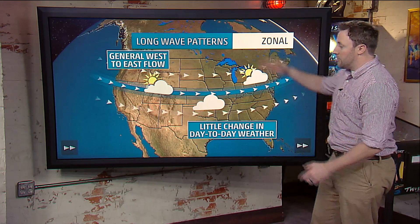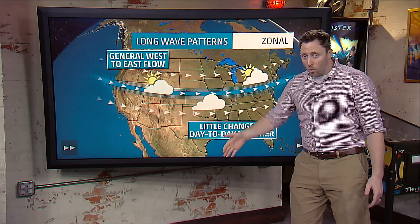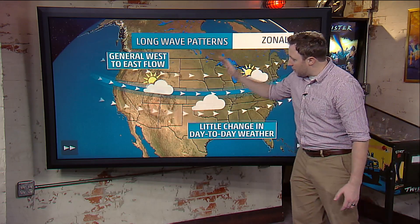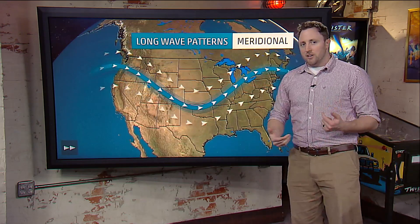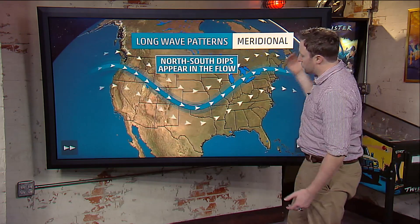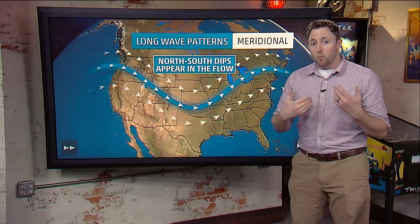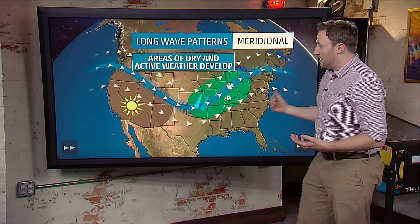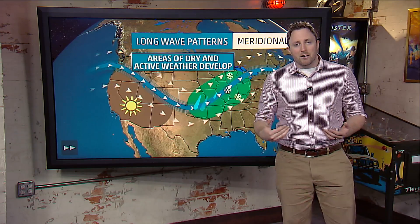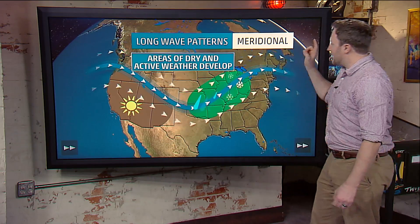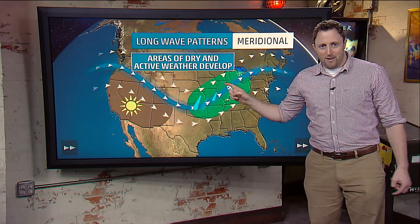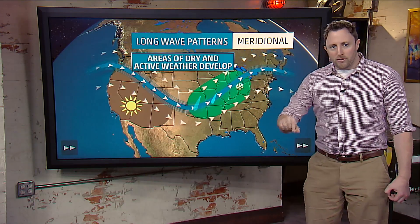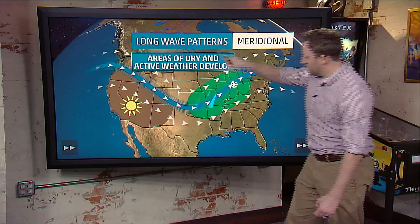But then if we get a little bit of a dip or rise in the jet stream, then we start to get some changes in there. We'll see some dry weather and some wet weather on either side of the jet stream. And that is called a meridional pattern, because it flows more north to south.